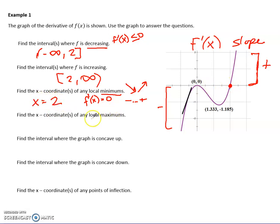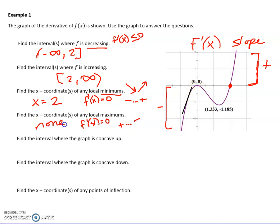Maximums would happen when we first look for the derivative being zero. We have two zeros — we already know one is a min, so maybe the other is a max. But to be a max you have to go from having a positive slope to a negative slope. This one does not — it's negative on both sides. So there aren't any maximums on this graph.